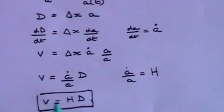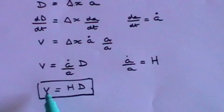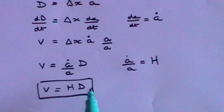Hubble could now take this equation and knowing the velocity, which of course he could calculate from the red shift, he could work out how far the galaxy was away from the Earth.